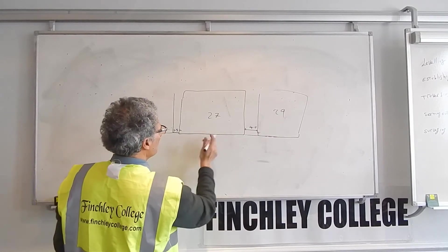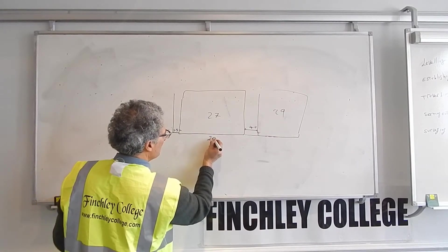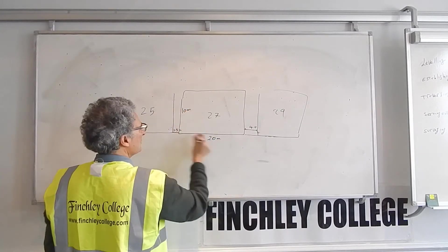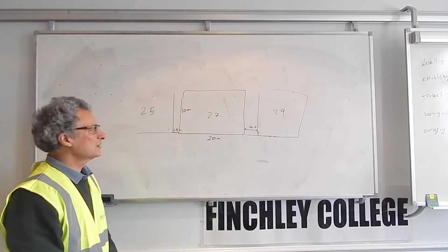So for example, let's assume that the overall distance is say 20 meters by 10 meters. That is your square building, 20 meters by 10 meters.